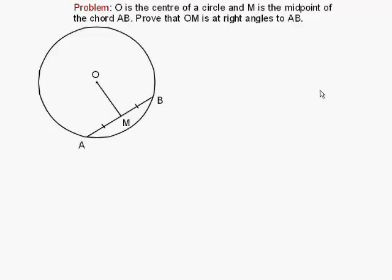And I'm going to do it using congruent triangles. Well, the immediate problem, of course, is we haven't actually got any triangles at all yet. So let's make some triangles. By joining up the centre to A and B, we've made two triangles.